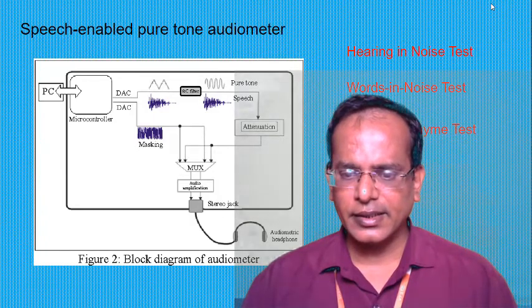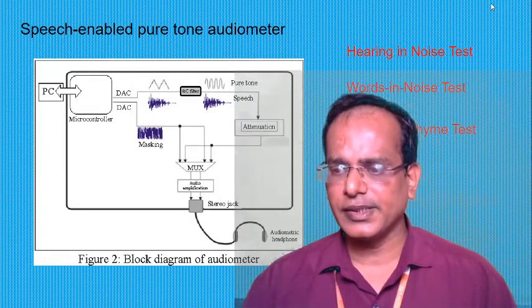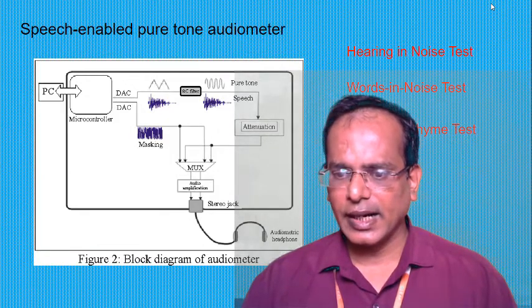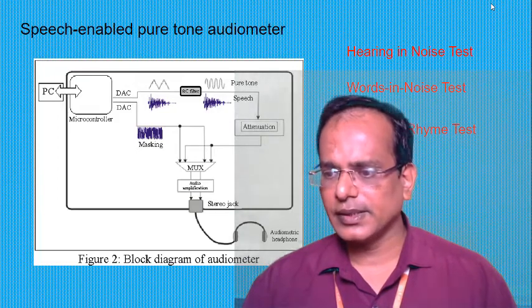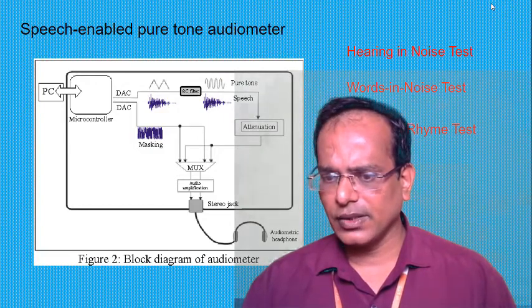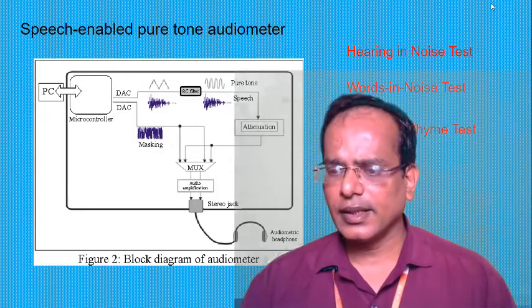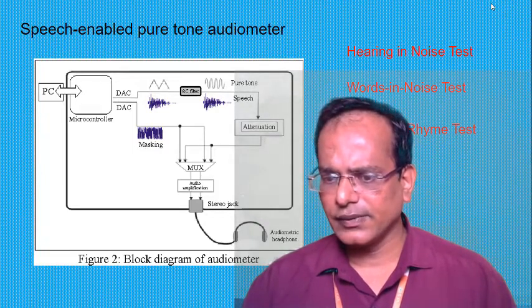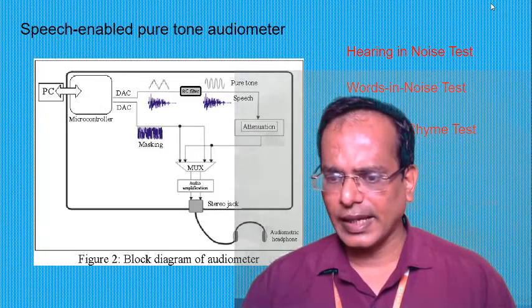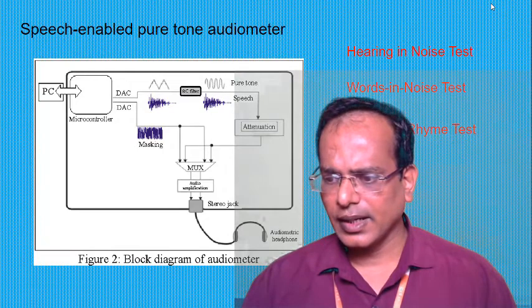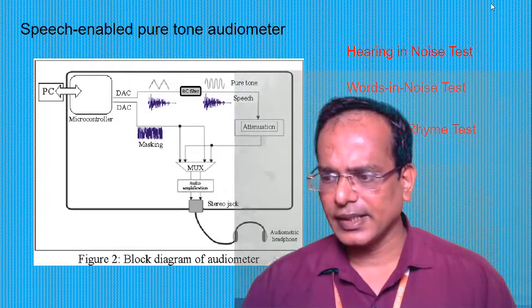Word recognition, formerly called speech discrimination, is the ability to correctly repeat monosyllabic words at a supra-threshold intensity. The word lists are phonetically balanced, meaning the speech sounds used occur with the same frequency as in the whole language. The score represents the percentage of words correctly recognized.